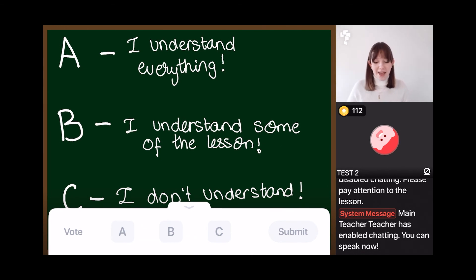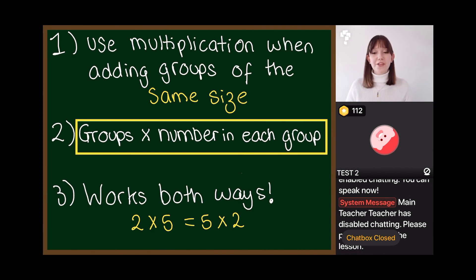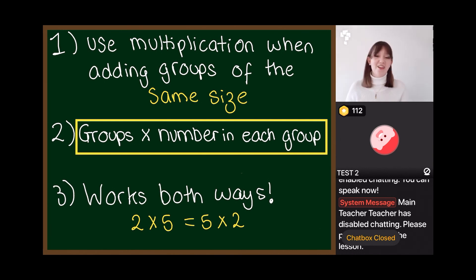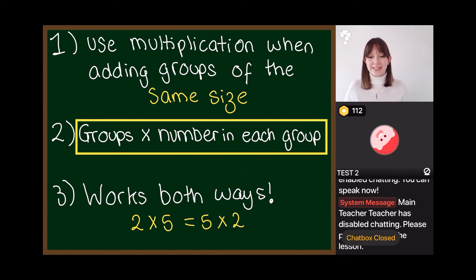Press A if you understand everything we've just done, press B if you kind of understand, and press C if you don't understand. We use multiplication when we're adding together groups of the same size. So if I was trying to add together two plus two plus three, could I use multiplication? No — I couldn't, because the groups aren't the same size.